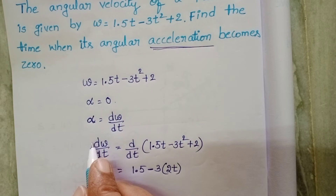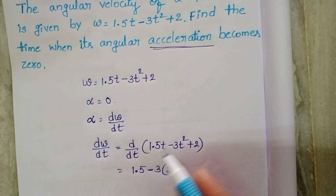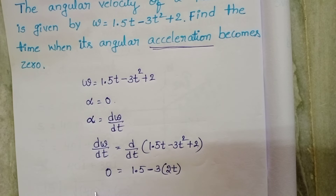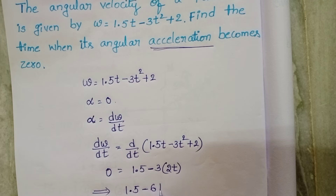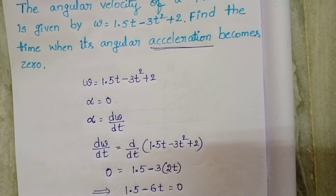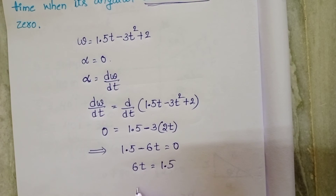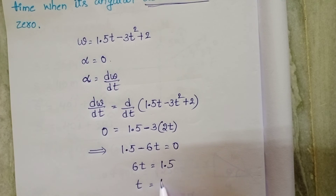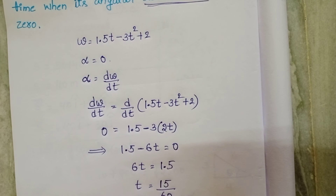Given angular acceleration is 0, so 1.5 minus 6t equals 0, then 6t equals 1.5. Therefore t equals 15 by 60 — simply multiply both sides by 10.